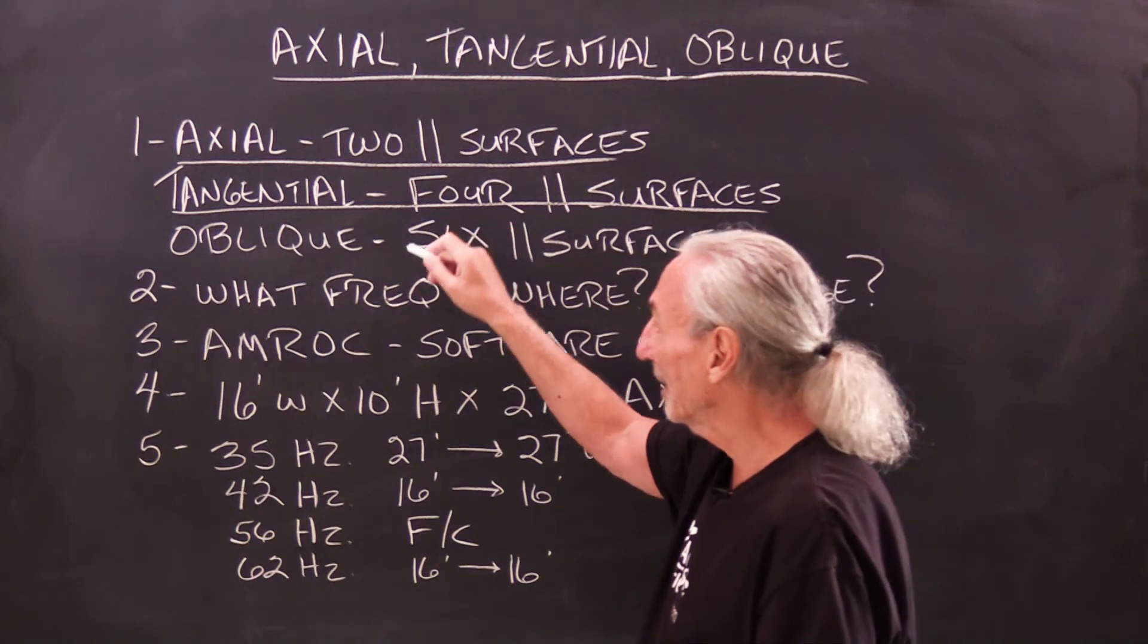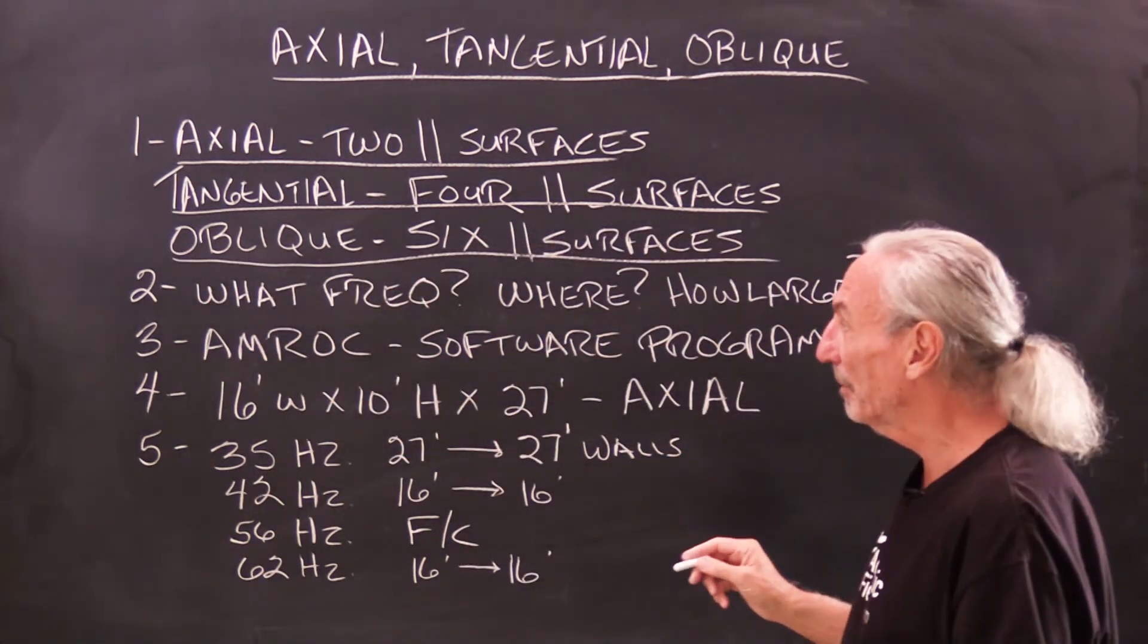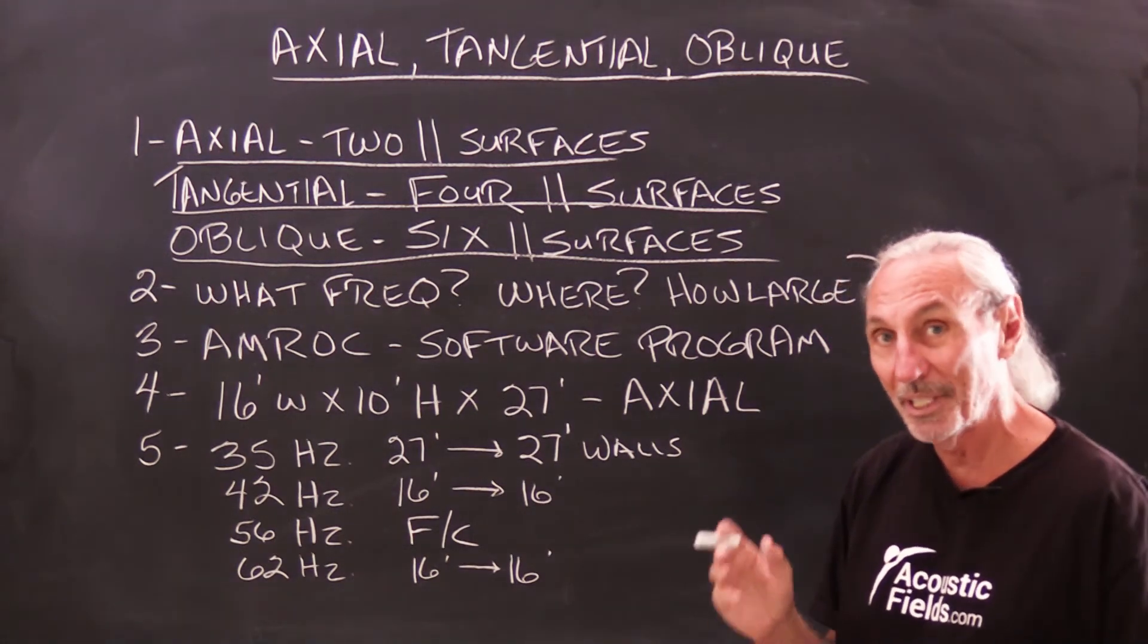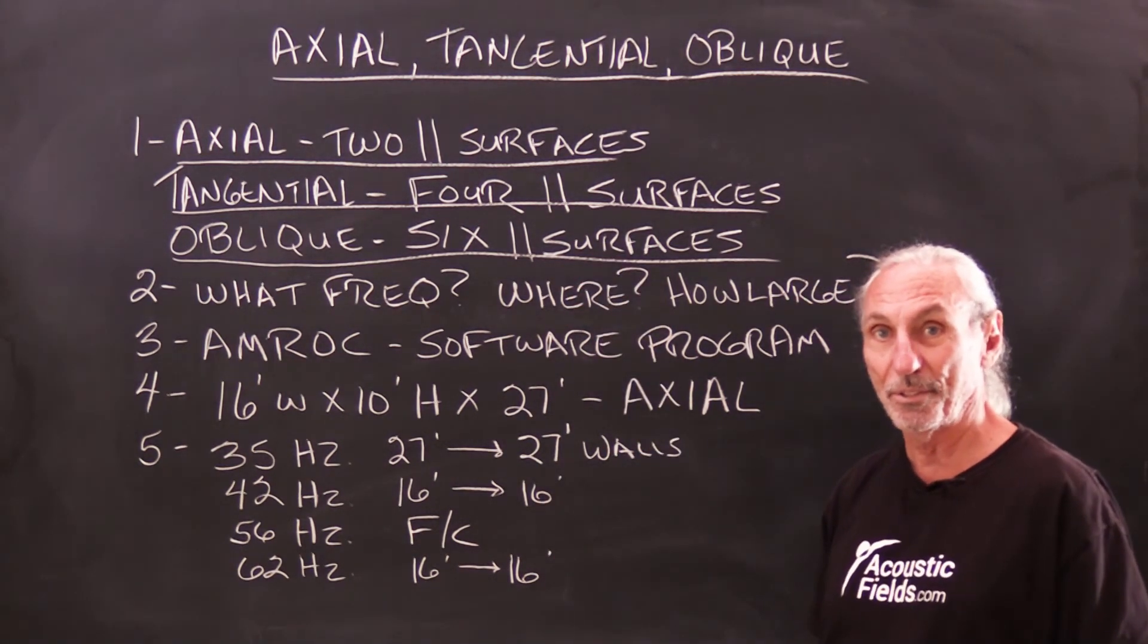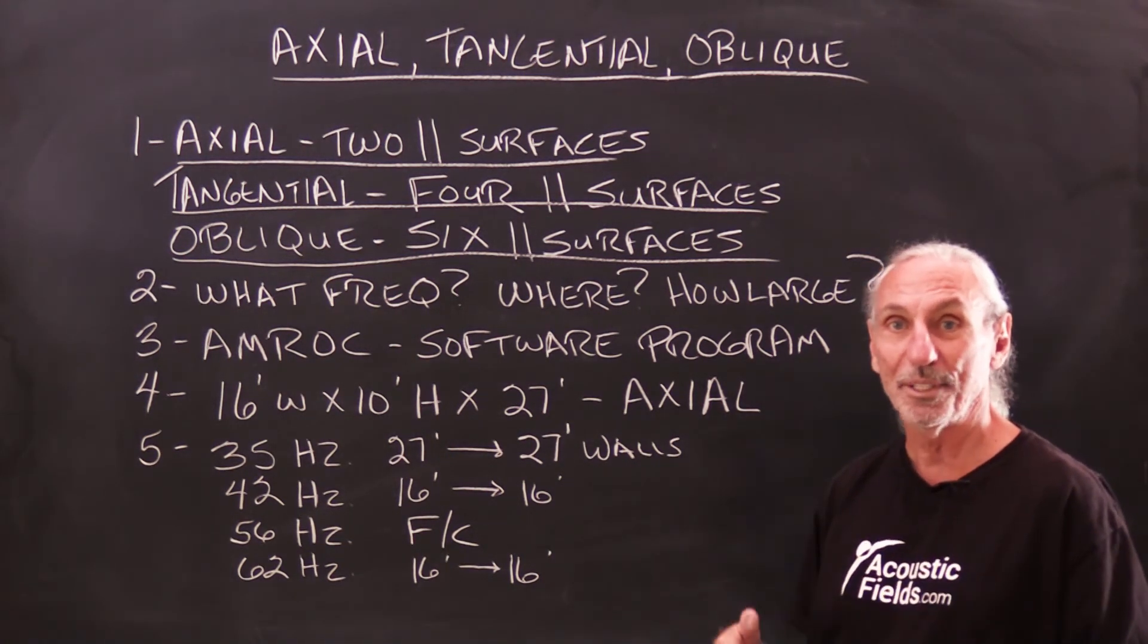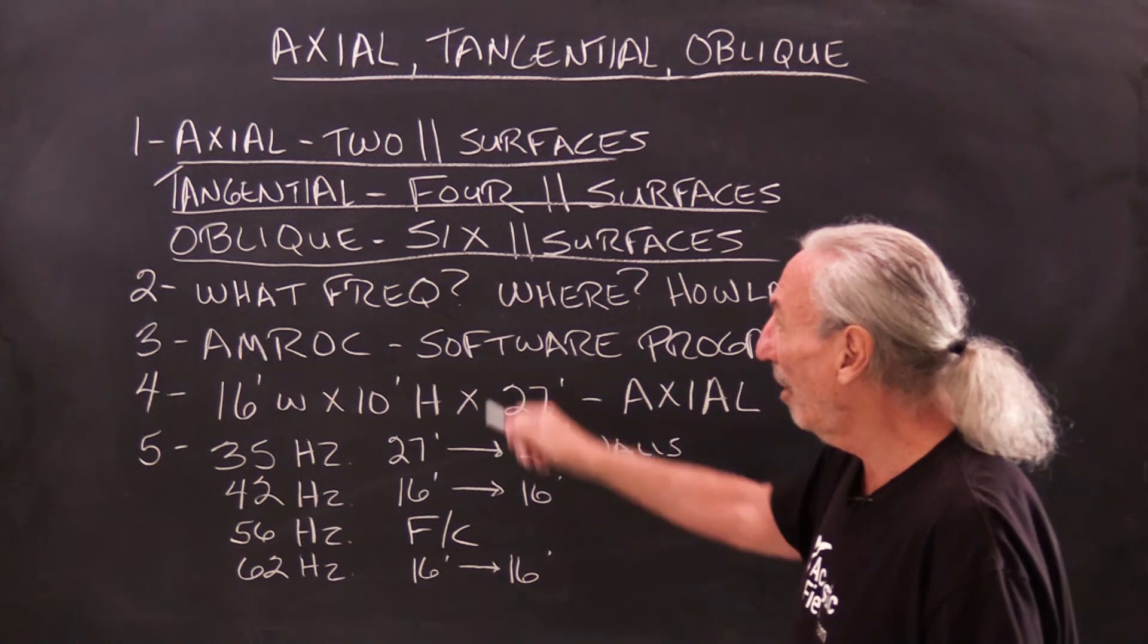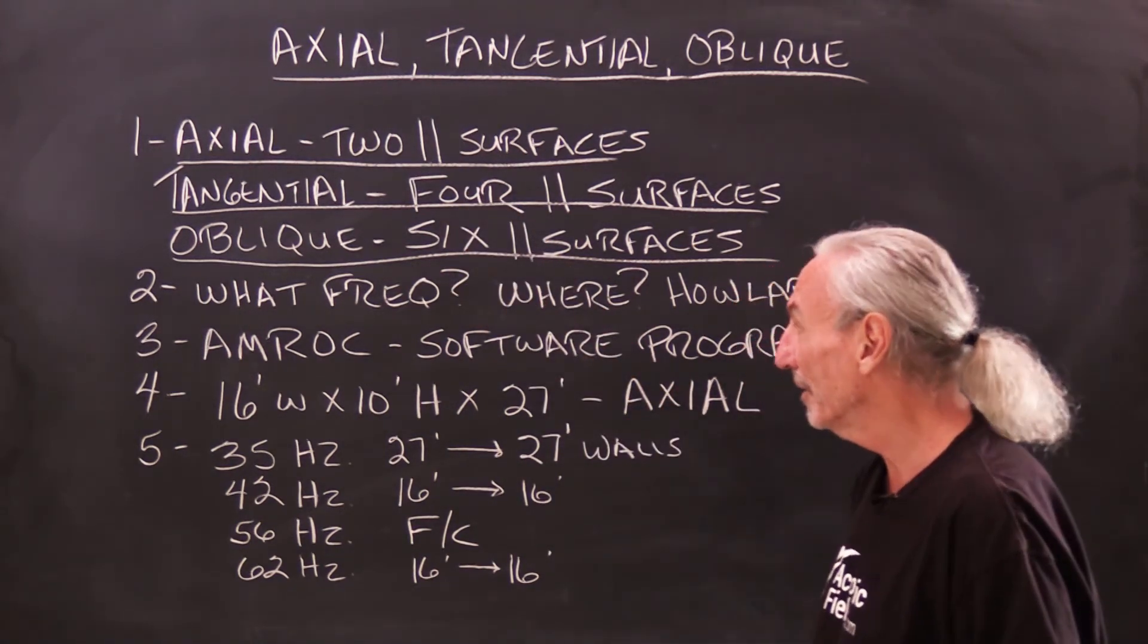So we have to take into consideration the pressure between all of these surfaces. And then oblique is the least pressure area and it's from six parallel surfaces. So it's all six surfaces in the room, walls, floor and ceiling. So all three of these are areas that we have to be concerned about and we have to treat.